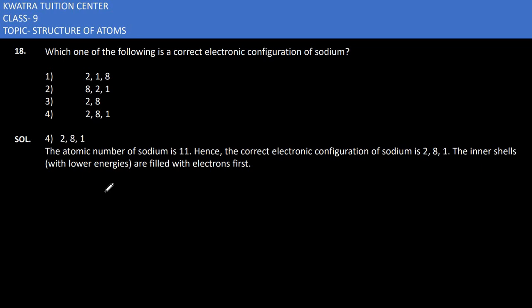In question 18, which one of the following is the correct electronic configuration of sodium? Sodium has atomic number 11, so we need to distribute 11 electrons across the K, L, and M shells.